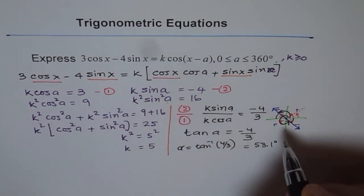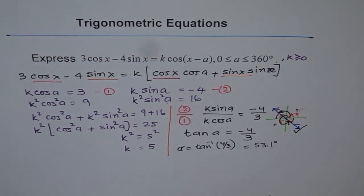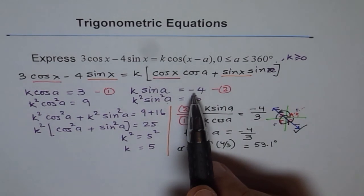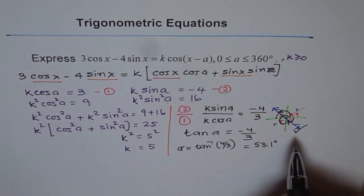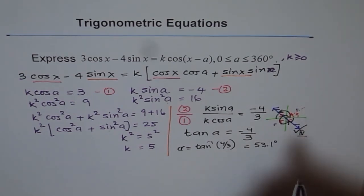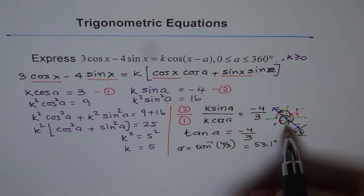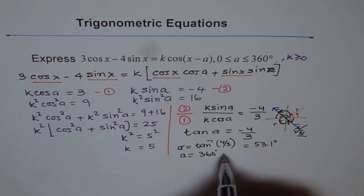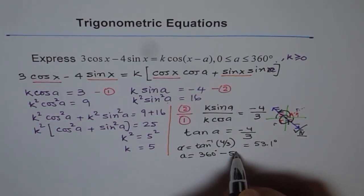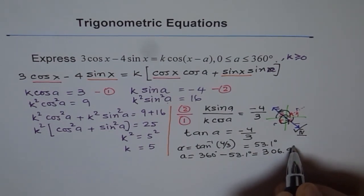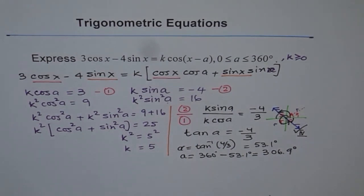Therefore, the only solution we have is a equals 360 degrees minus 53.1 degrees. That is the answer, which is 306.9 degrees.